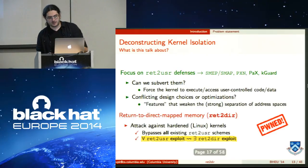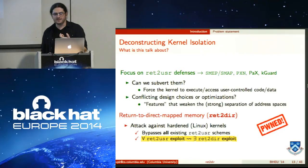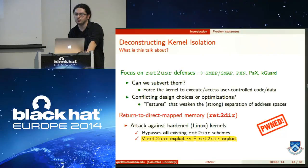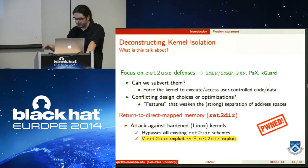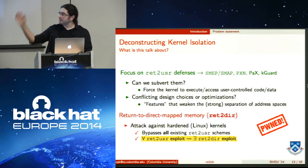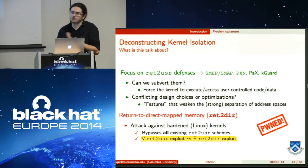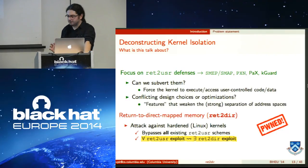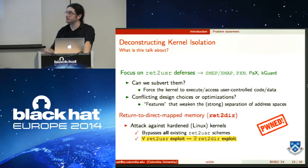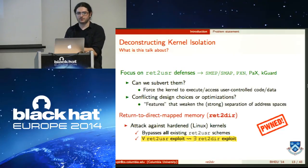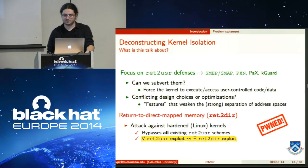Ret2Dir is the new technique I'm going to talk about. It's called Return to Direct Map Memory. It's an attack that can be applied against hardened kernels. Everything you'll see is against Linux — we focused on Linux because all the previous defenses were available there, making it a good testbed, and it runs on millions of machines. For every return-to-user exploit blocked by one of these protections, it will in most cases be possible to convert it into a Ret2Dir equivalent that bypasses it.